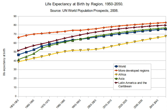The term maximum lifespan has a quite different meaning and is more related to longevity. Life expectancy is also used in plant or animal ecology and life tables, also known as actuarial tables. The term life expectancy may also be used in the context of manufactured objects, but the related term shelf life is used for consumer products, and the terms mean time to breakdown and mean time between failures are used in engineering.